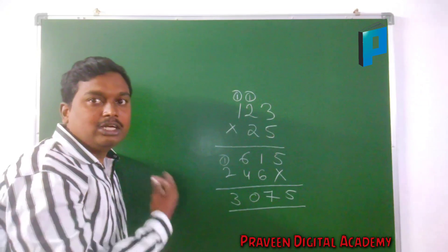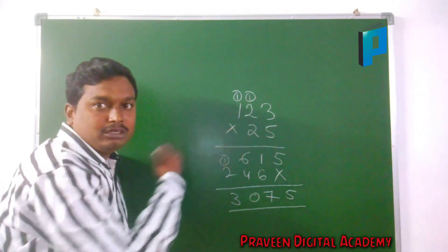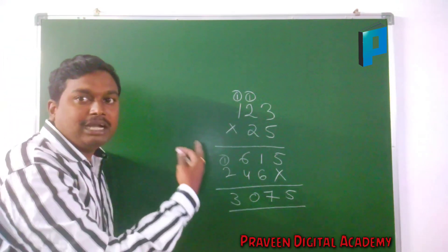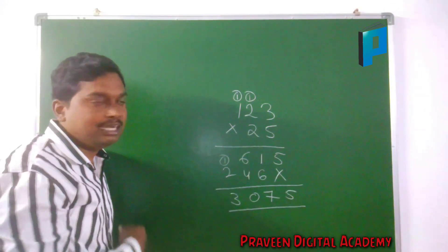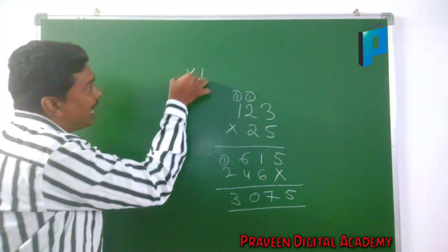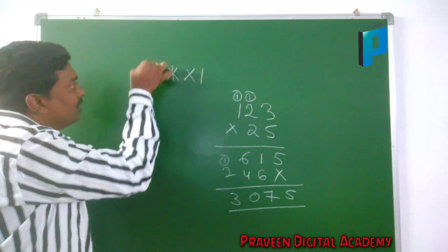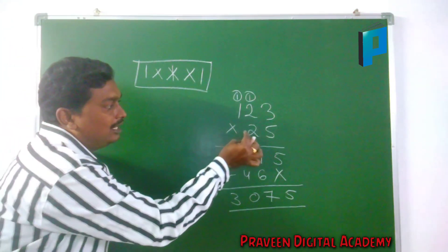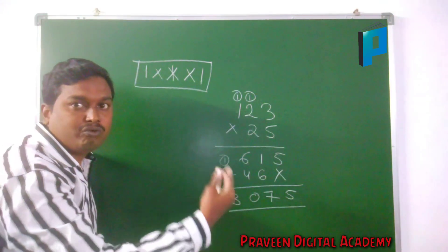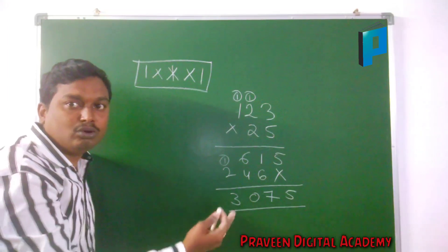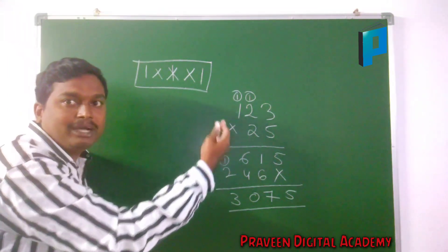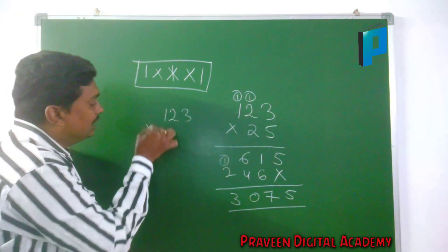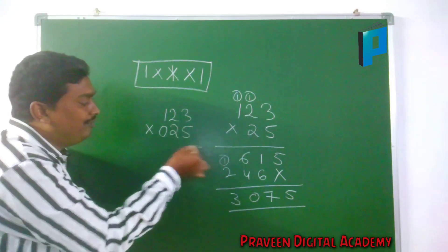I will tell you a shortcut method to multiply three numbers with two numbers in a very easy way. The shortcut is the same as multiplying three numbers with three numbers — the 1×star×1 pattern. But here we should write 25 as 025, converting it into a 3-by-3 problem so we can solve it very easily. So we write 123 into 025.